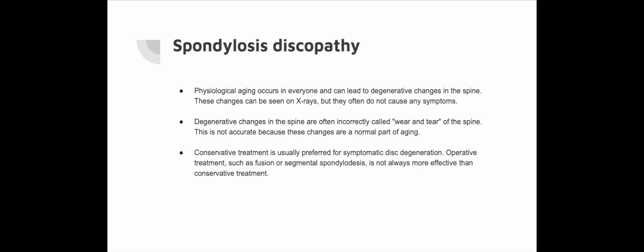Spondylosis discopathy, or disc disease, describes a condition involving an intervertebral disc that can be painful. The process begins with loss of disc height, leading to a period of instability, before the disc returns to a stable and asymptomatic phase. Patients typically present with chronic intermittent low back pain between the ages of 30 and 55. The pain is usually localised in the lumbar region and may radiate to the sacroiliac joints and over the back of the thigh up to the knee. Physical examination typically reveals no neurological abnormalities. Radiological imaging has low sensitivity and low specificity for diagnosing disc disease.